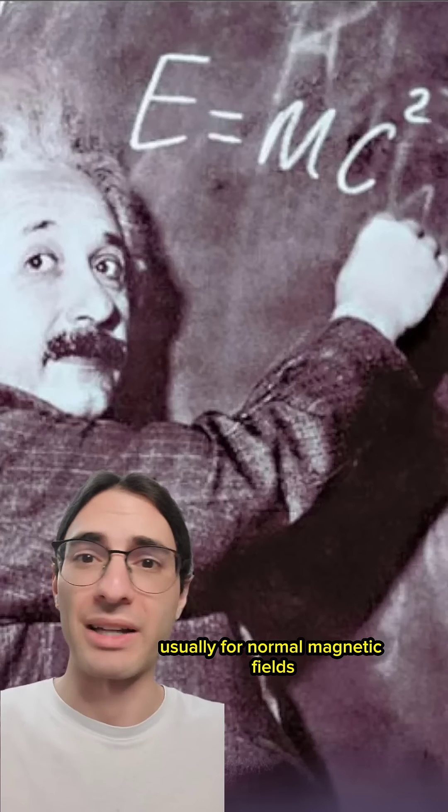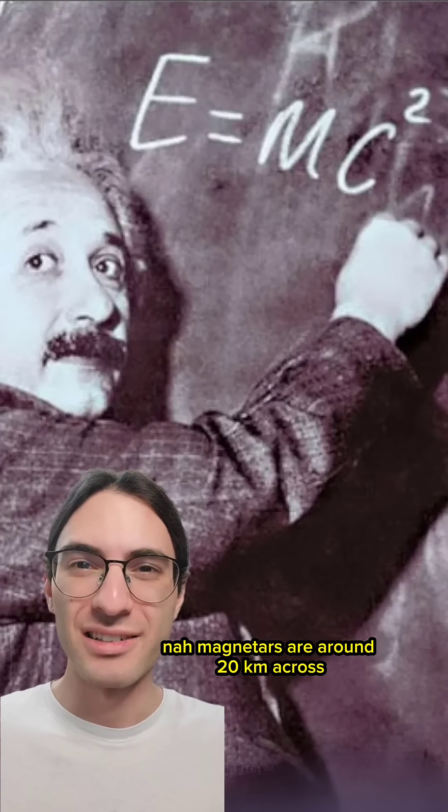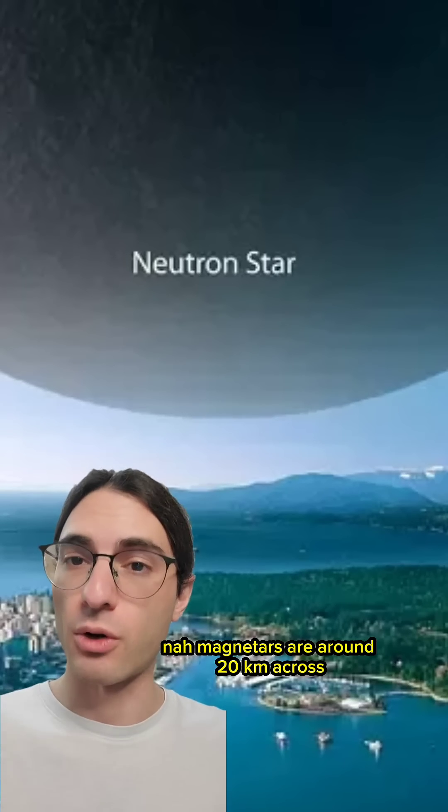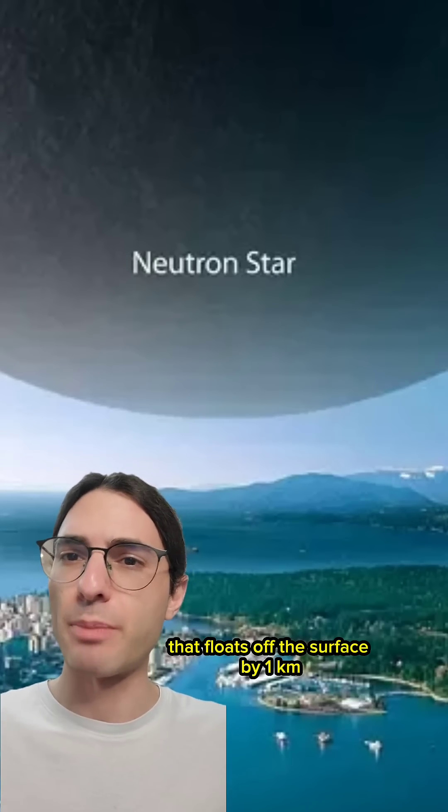Usually, for normal magnetic fields, that's basically nothing. But around a magnetar? Nah. Magnetars are around 20 kilometers across. Now, imagine a bubble wrapped around the magnetar that floats off the surface by one kilometer.